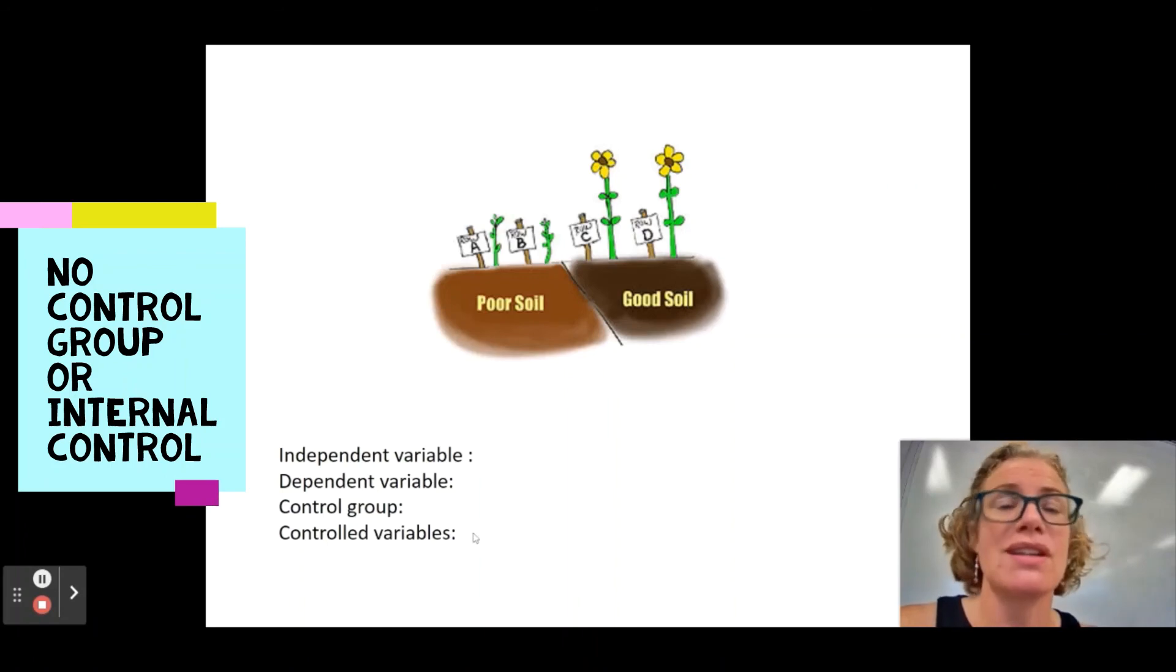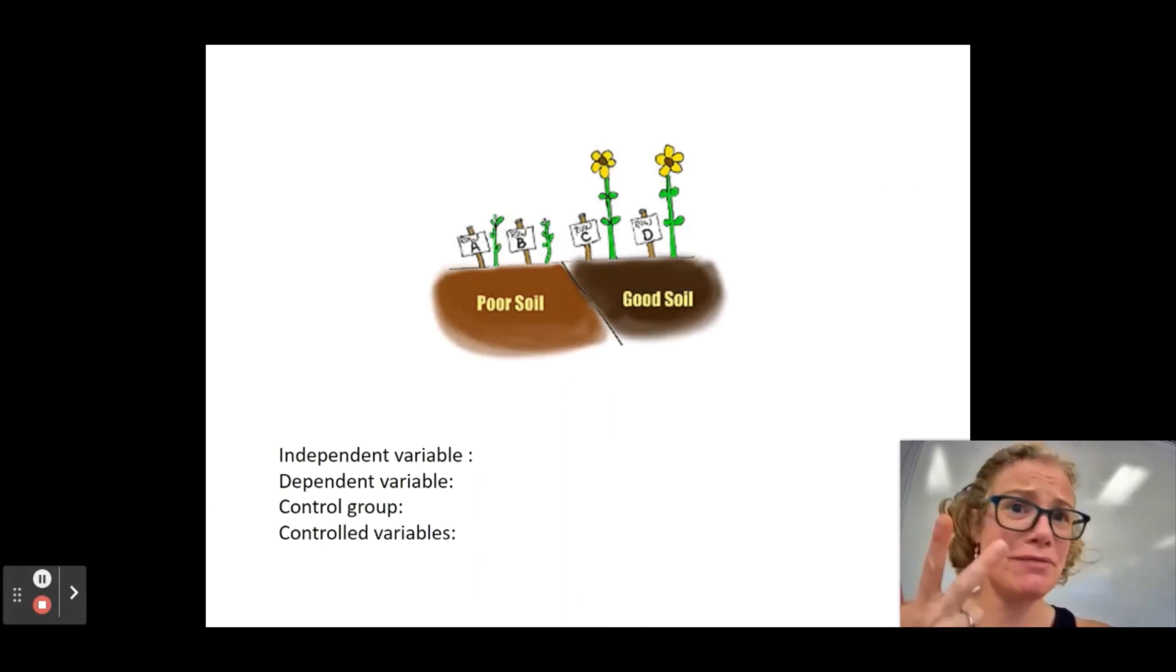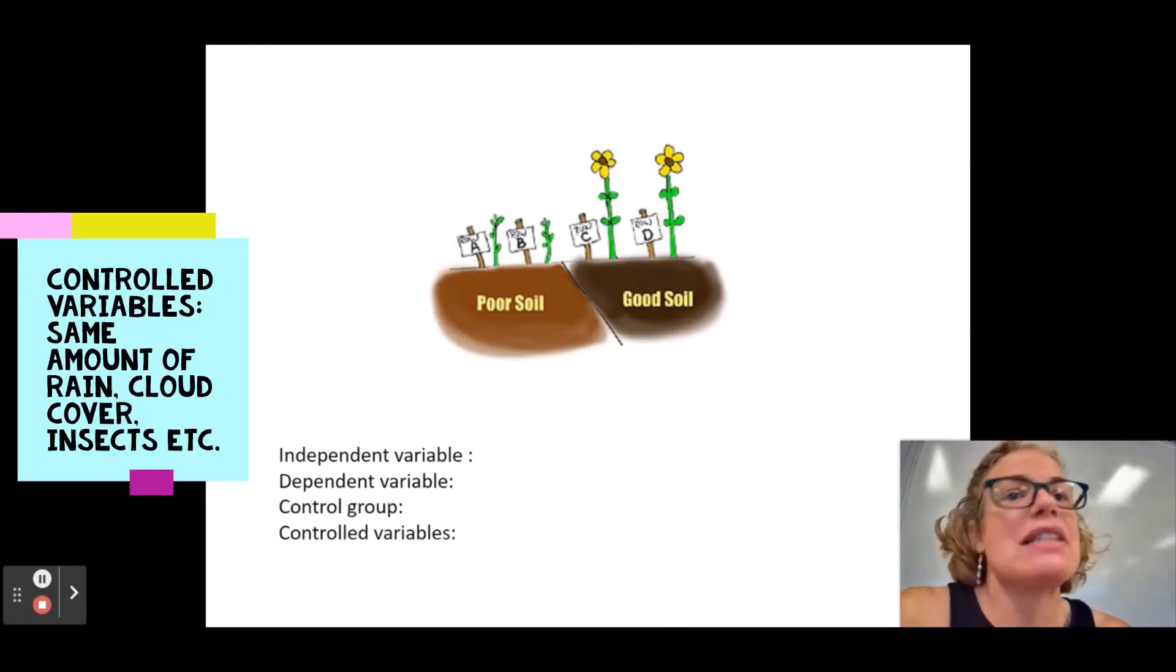Controlled variables. Same amount of rain. Same amount of cloud cover. Same amount of shade. Same amount of water. Same amount of bugs pollinating the plants. You can see that, like, some things would be easier to control than others.